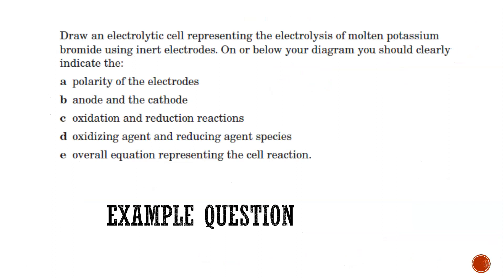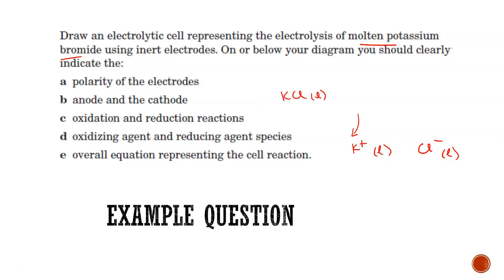Here is an example question — pause the video, have a go, then come back for the answer. You're going to draw an electrolytic cell for the electrolysis of molten potassium bromide. Remember electrolytic cells have only one container; you don't separate the half reactions. The molten KBr will be liquid, with only K⁺ and Br⁻ ions present. Identify the anode and cathode, the polarity of the electrodes, include your power pack, write the oxidation and reduction reactions, identify the oxidizing agent, and write the overall equation.